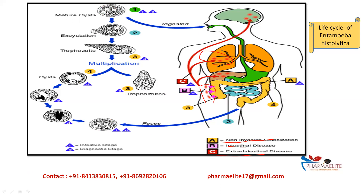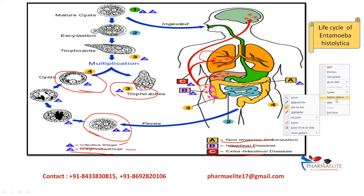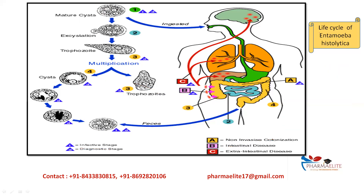The infective stage and diagnostic stage are important. The trophozoite is the diagnostic stage, and the mature cyst is both the infective stage and diagnostic stage. So we know how Entamoeba histolytica infects the intestinal and extra-intestinal parts of the body.